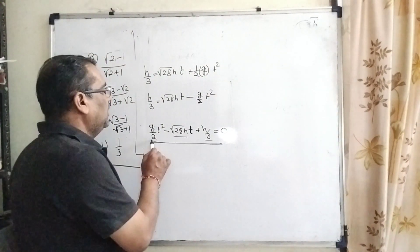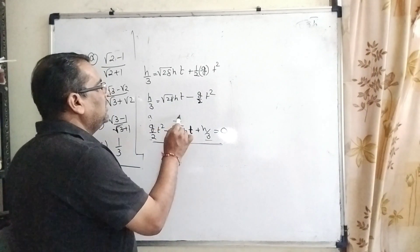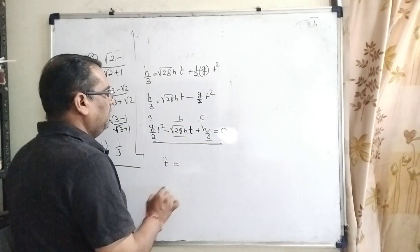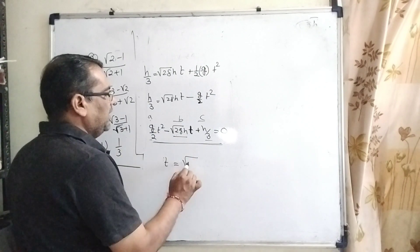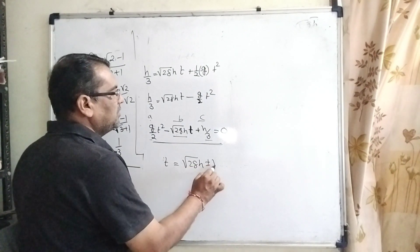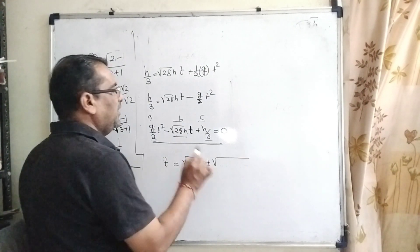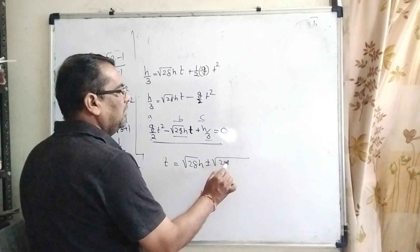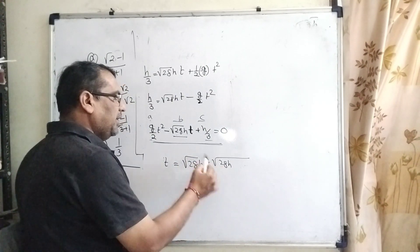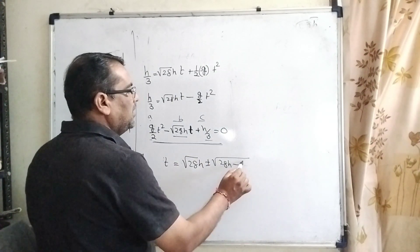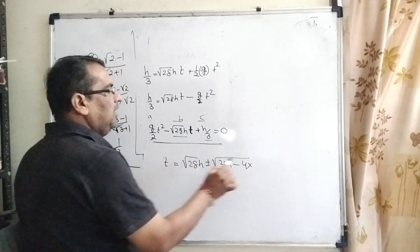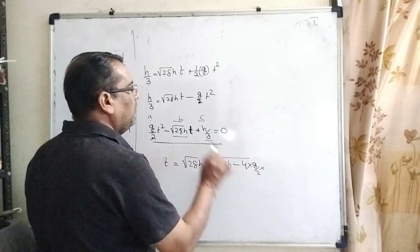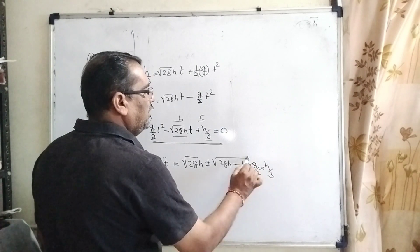Here a = g/2, b = -√(2gh), c = h/3. Using the quadratic formula: t = [√(2gh) ± √(2gh - 4(g/2)(h/3))] / (2·g/2).